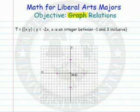In this video, we're going to graph relations. We have a relation here, y equals negative 2x. We want to graph that. The domain is going to be the numbers between negative 1 and 3 that are integers inclusive, which means we're going to include negative 1 and 3.